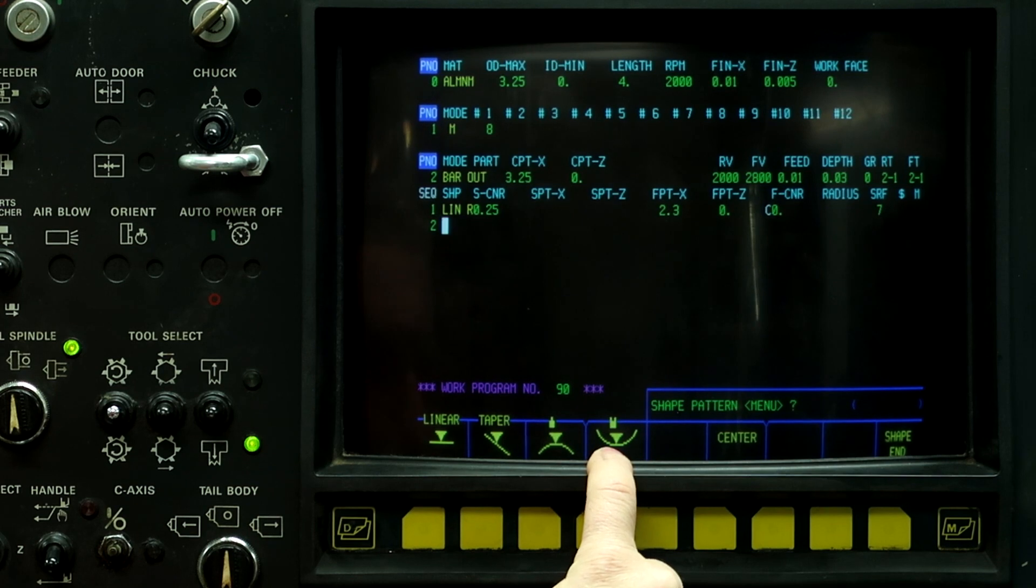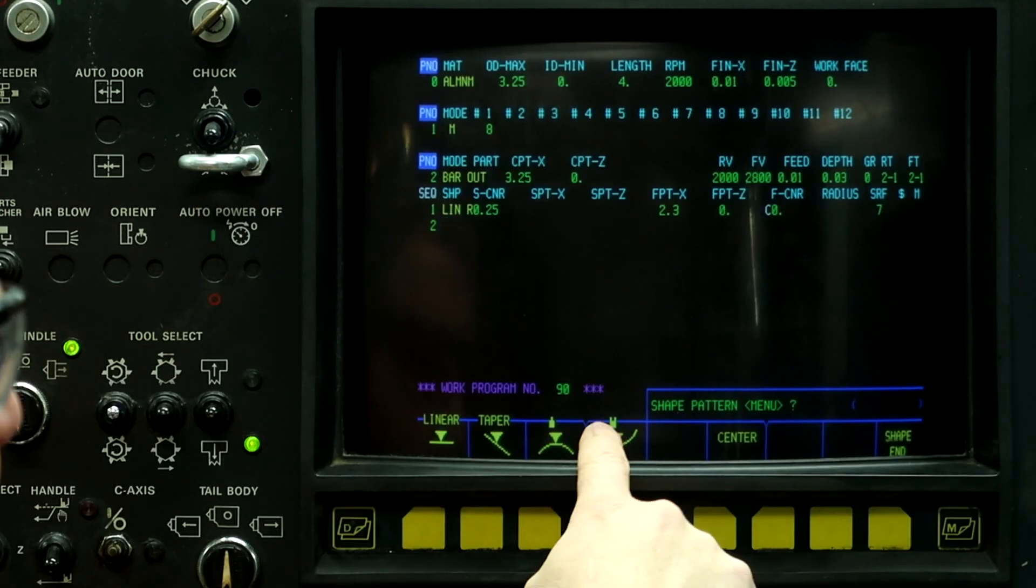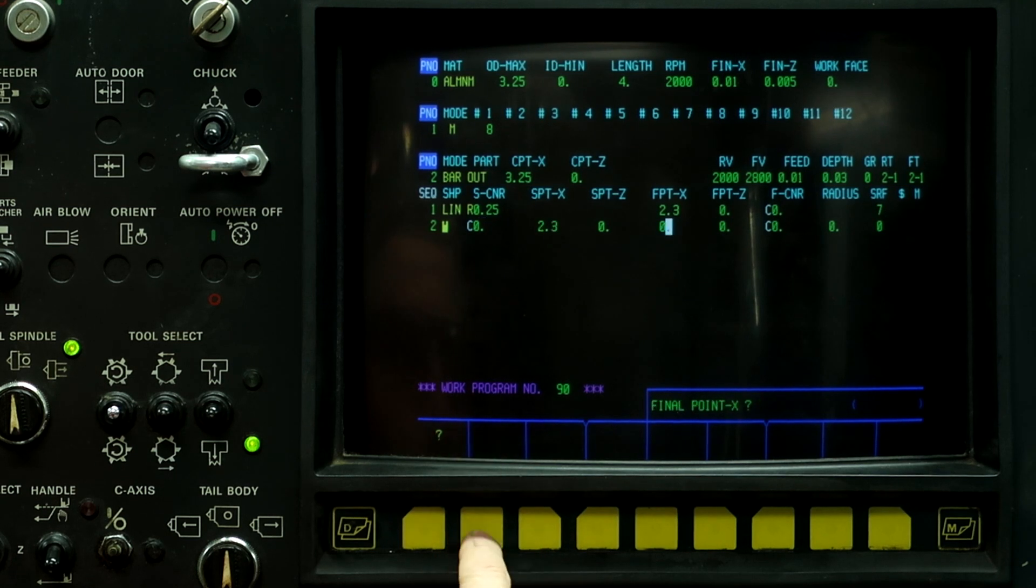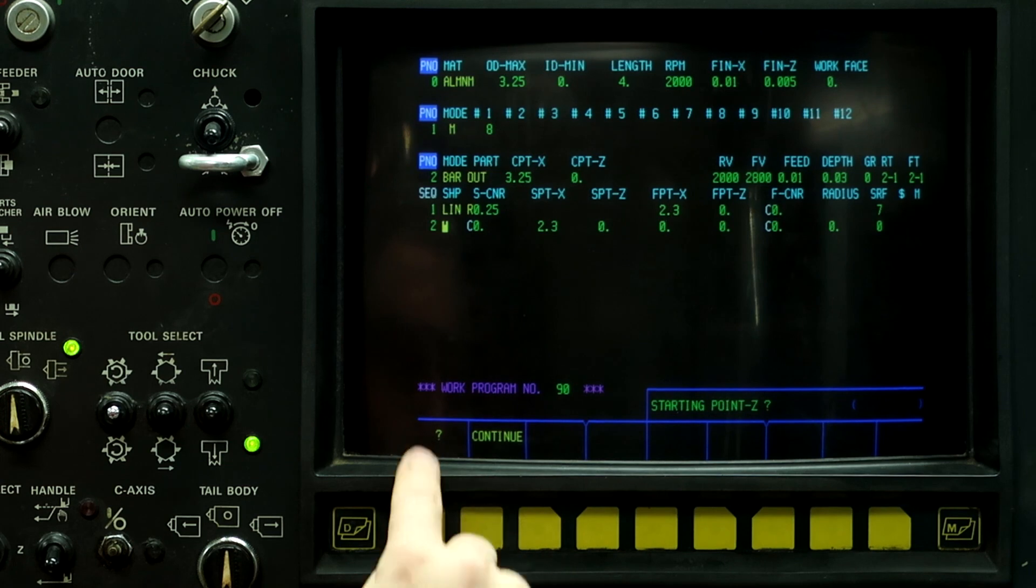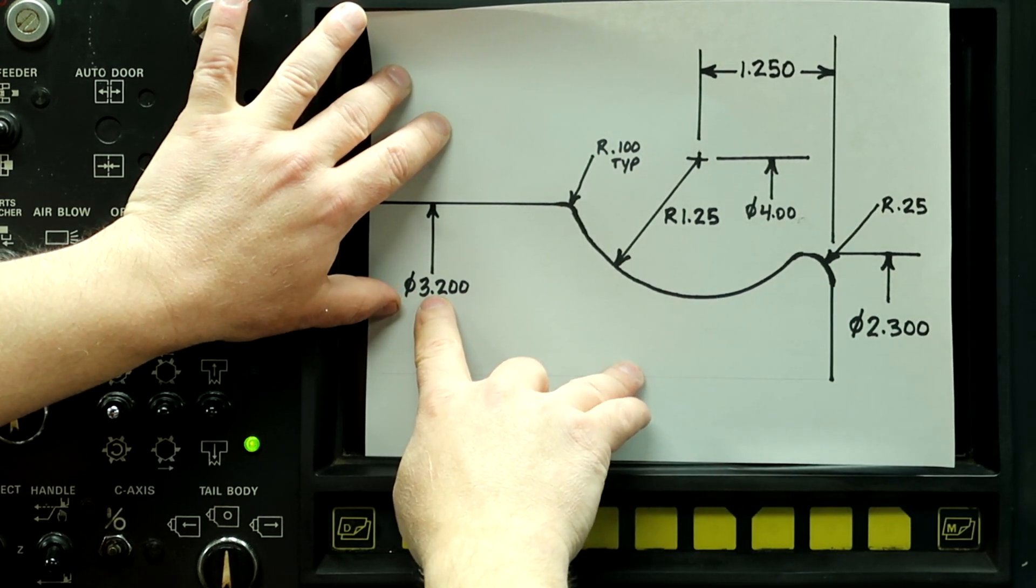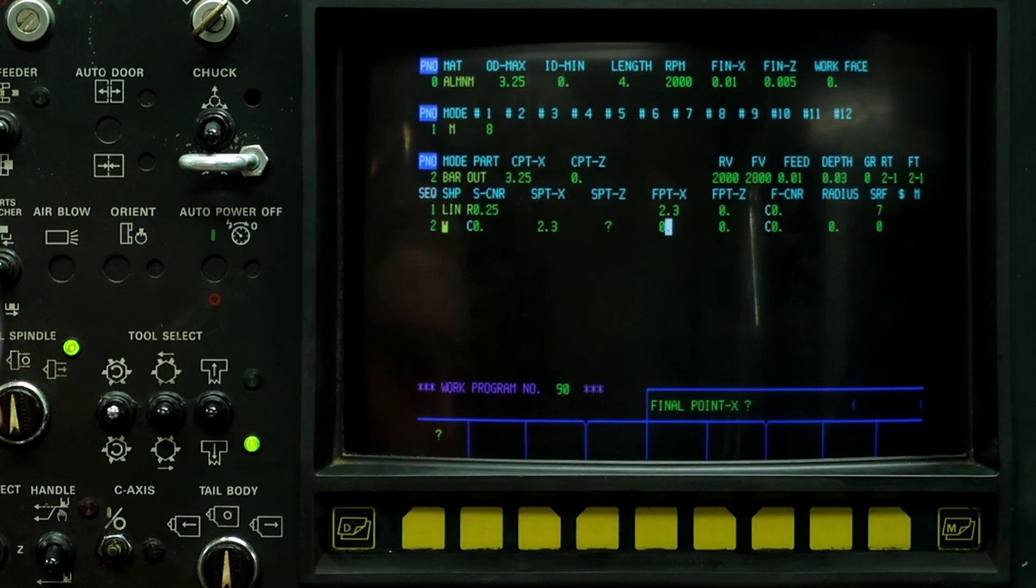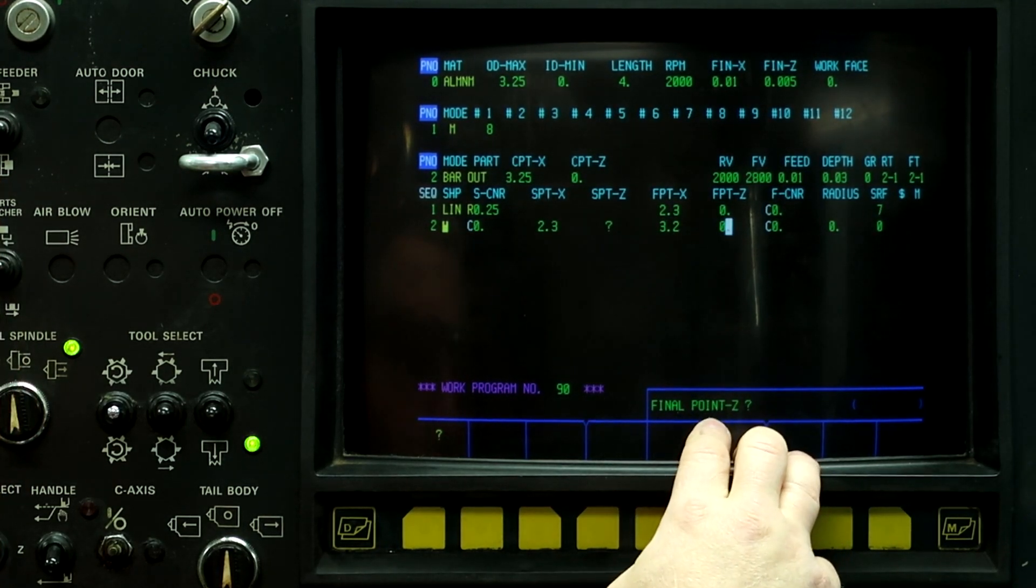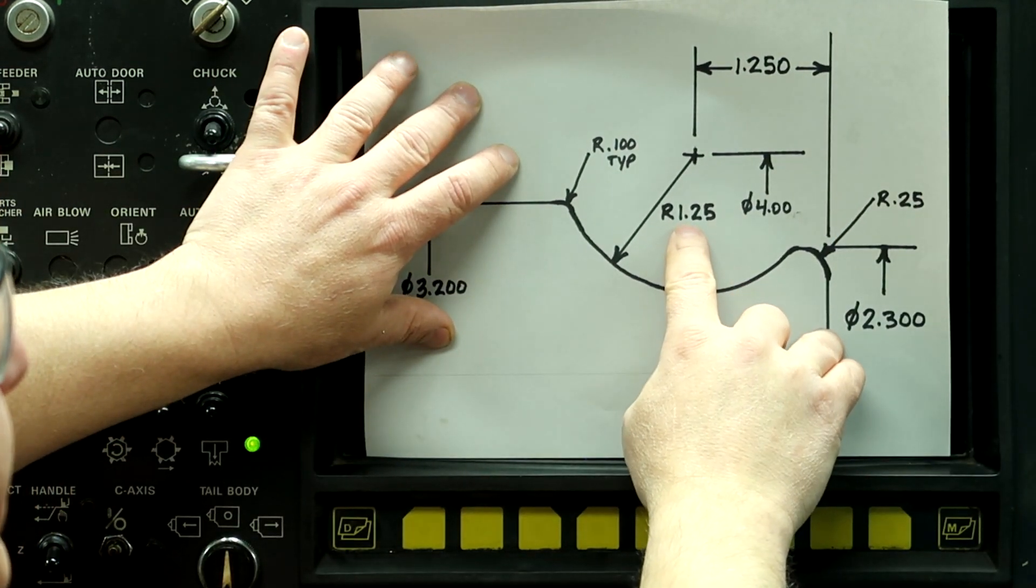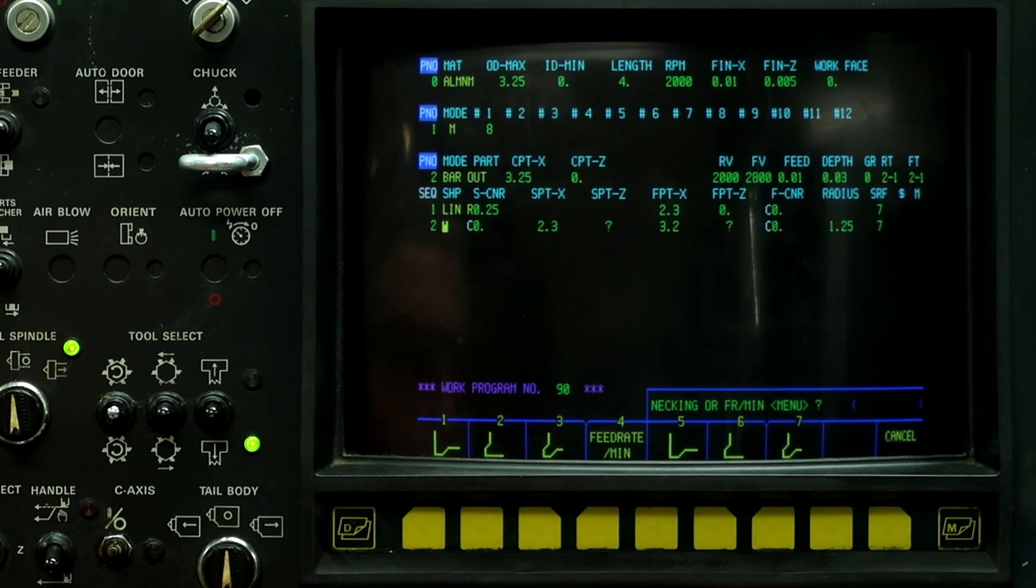Now we're going to program the concave radius. So this shape looks like this one down here, so this is the concave radius. Starting corner, we're going to push continue. We're going to push the point on Z and push the question mark. Final point on X is going to be over here to 3.2 inches, and the final point Z is not specified on the print. So we're going to put a question mark for the final point on Z. And then the radius here is 1.250 and a surface roughness of seven. Down arrow.